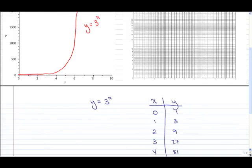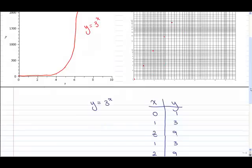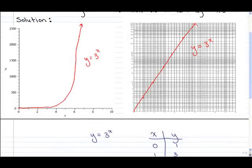When x is equal to 0, y is equal to 1. When x is equal to 1, y is equal to 3. When x is equal to 2, y is equal to 9. When x is equal to 3, y is 27. When x is 4, y is 81. When x is 5, y is 243. When x is 6, y is 729. You'll notice that on the semi-log graph, the function y equals 3 to the x actually looks linear.